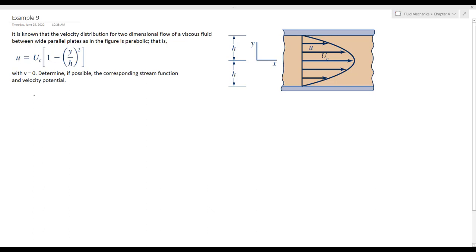So first, let's check if the continuity equation is satisfied. For two-dimensional incompressible flow, we have del u over del x plus del v over del y is equal to 0. So del u